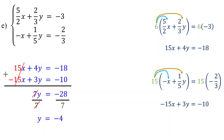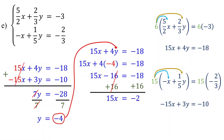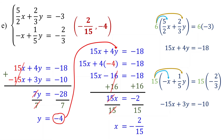The next step is to find the value of x. To avoid working with fractions, substitute y equals negative 4 into one of the equations with cleared fractions rather than the original equations. Let's substitute into the first equation. 4 times negative 4 is negative 16. Then add 16 to both sides: negative 18 plus 16 is negative 2. Dividing both sides by 15, you get x equals negative 2 over 15. Therefore, the solution as an ordered pair is (-2/15, -4).